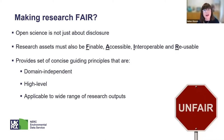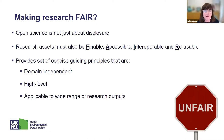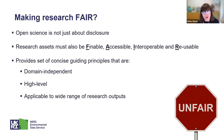One more important aspect: open science is not just about disclosure. Giving your data a DOI or publishing your research in a journal does not make your data open — that is only publishing your data. To actually practice open science, you need to think about how findable, accessible, interoperable, and reusable your research assets are. The FAIR principles provide a set of concise guiding principles that are increasingly widely adopted, domain-independent, high-level, and applicable to a wide range of research outputs.